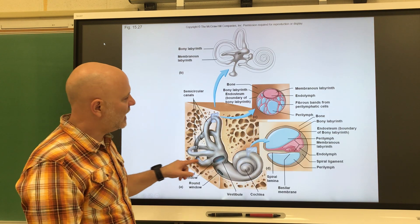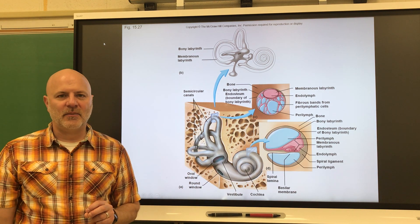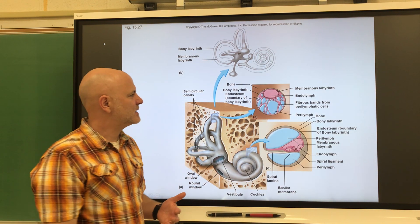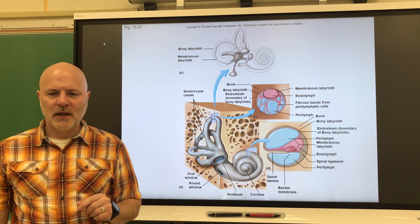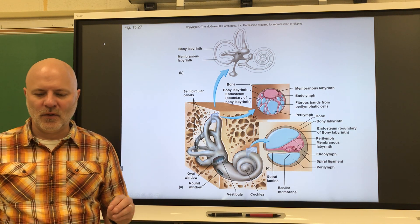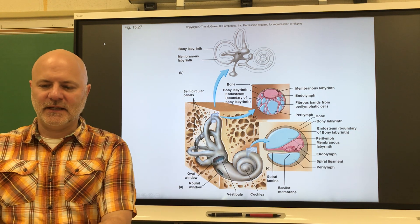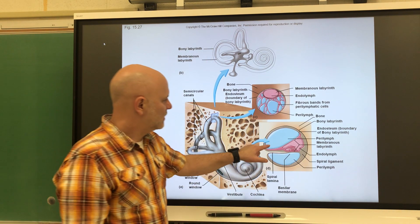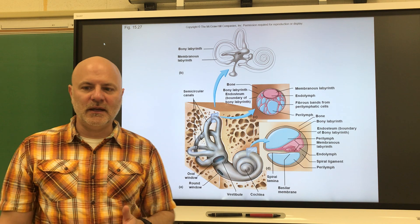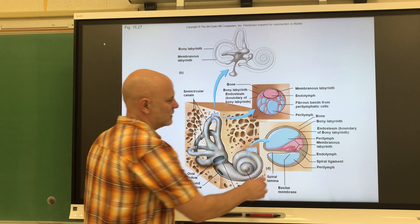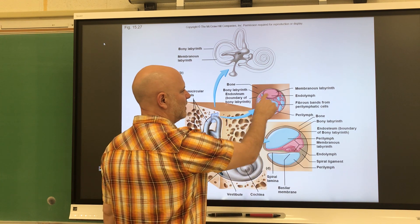Within the osseous labyrinth, shown in a darker pink, is the membranous labyrinth — a tube that lies within the osseous labyrinth. There are two kinds of fluid in the inner ear. One is perilymph, shown in blue, which is fluid between the osseous and membranous labyrinths. The other is endolymph, which is fluid within the membranous labyrinth.